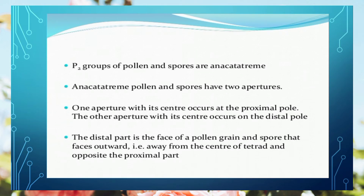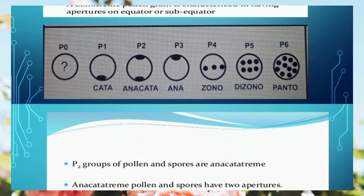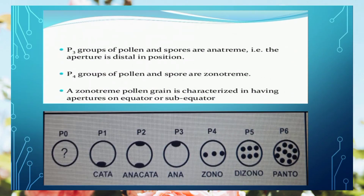P2 represents the anacatadrome condition. In anacatadrome, there are specifically 2 apertures — one on the proximal pole and one on the opposite distal pole. The distal side is defined as the side opposite to the proximal pole in a tetrad. In anacatadrome, apertures are present at both proximal and distal positions. The P3 group has one aperture on the equatorial zone.